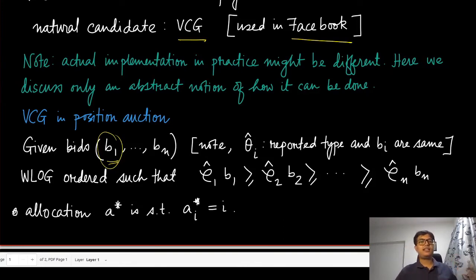The bidder numbers are unimportant. All that matters is essentially how we are going to sort them. Without loss of generality, let us assume they are numbered in the way such that they are sorted according to their values of ρ_i hat times b_i.